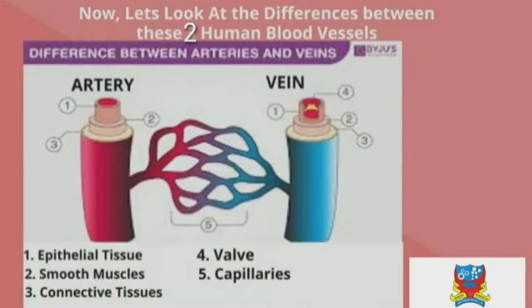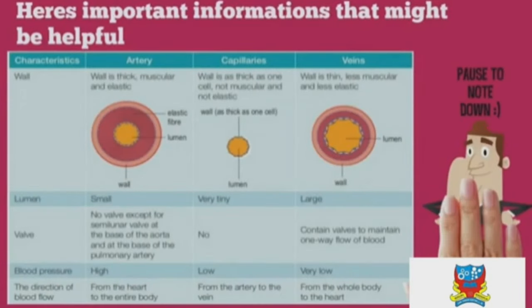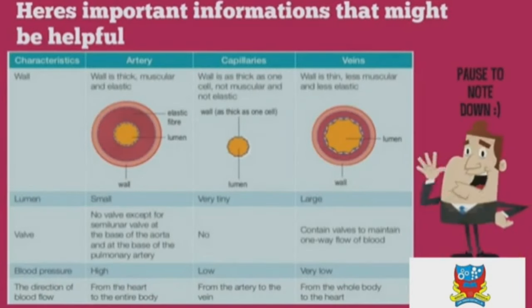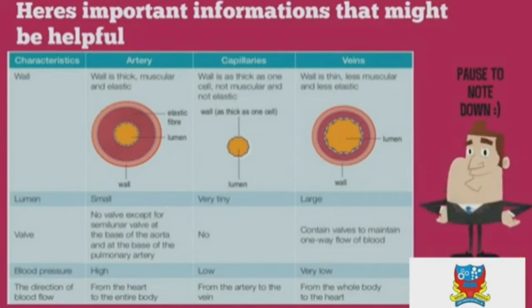The main differences between arteries and veins include differences in epithelial tissue, smooth muscles, connective tissues, presence of valves, and the capillaries within them. These differences are detailed in the comparison table provided.